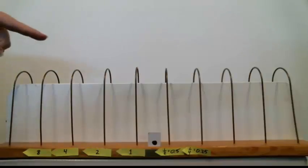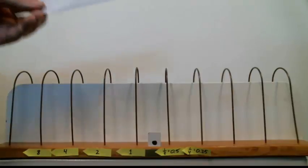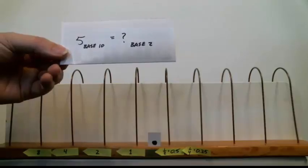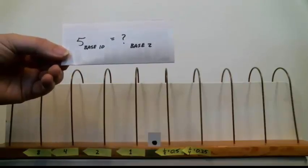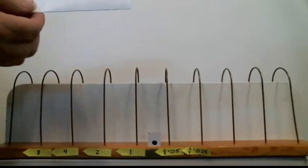Let's use our base 2 vertical abacus to now convert from base 10 into base 2. So I want to convert this number, which is the number 5 in base 10. What does that look like in base 2? We do the same procedure.